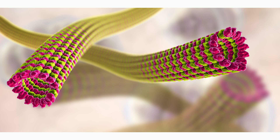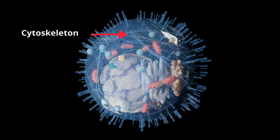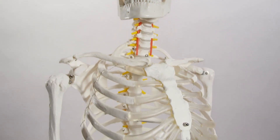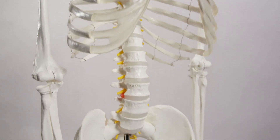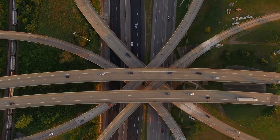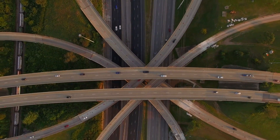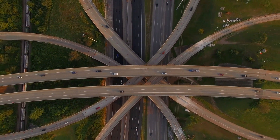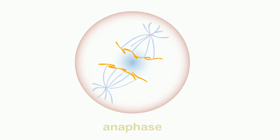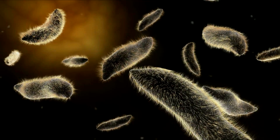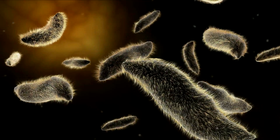The cytoskeleton has several different jobs. First, it helps provide support, much like your skeleton provides support for your body. It provides tracks or highways for the movement of vesicles and other objects in the cell. It helps pull the chromosomes apart during mitosis and even helps the cell move. Some single-cell organisms have cilia made up of cytoskeleton filament.